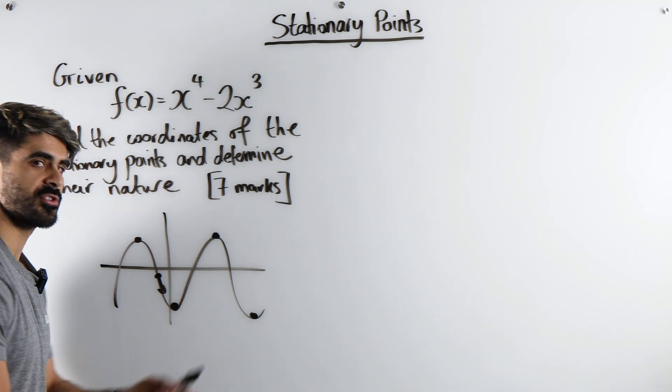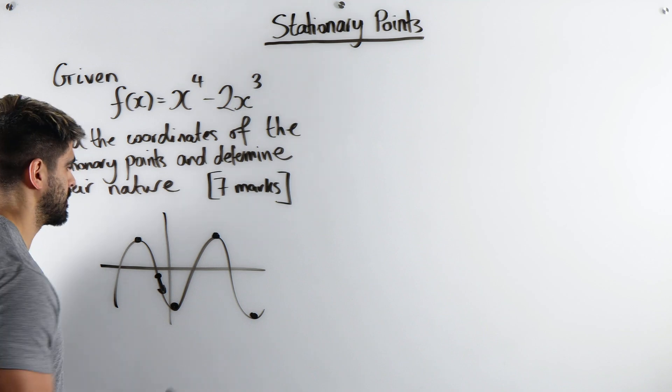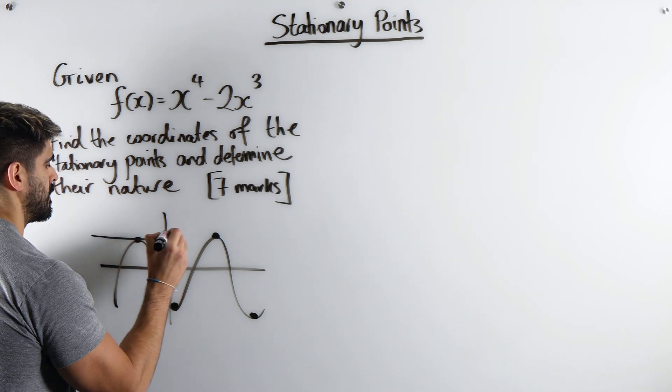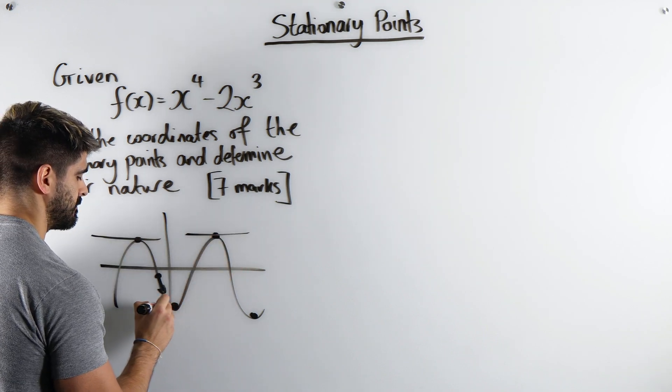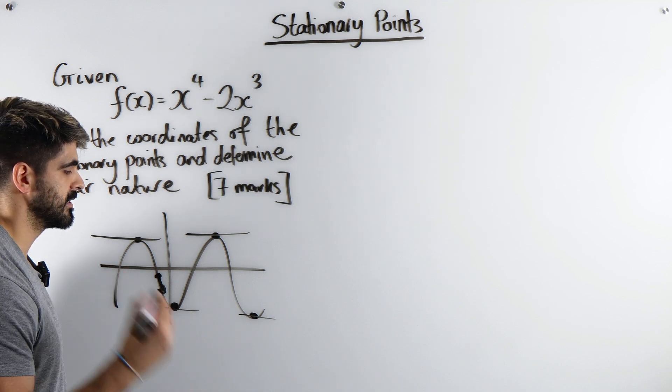But obviously that's not even in A levels. Now what's special about all of these points, stationary points? Well, if you were to draw tangents here, they would all be flat. Meaning their gradients would be 0. Horizontal means 0 gradient.